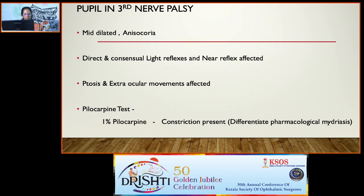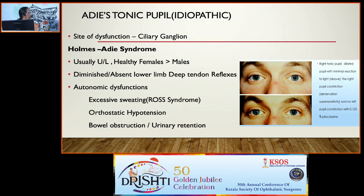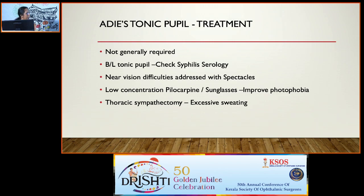In third nerve palsy, the pupil is mid-dilated with anisocoria; direct, consensual, light, and near reflexes are affected with associated ptosis and extraocular motility deficiency. It can be differentiated from pharmacological mydriasis by 1% pilocarpine — a third nerve palsy pupil will constrict but pharmacological mydriasis will not. Tonic pupil results from damage to the ciliary ganglion and short ciliary nerves due to viral infections, trauma, diabetes, or idiopathy. The affected pupil is larger, the light reaction is absent, the near reflex is very slow and tonic, and there is accommodative paresis. This tonic pupil shows cholinergic supersensitivity to low-dose pilocarpine. Holmes-Adie syndrome is usually unilateral, more common in healthy females, with associated diminished lower deep tendon reflexes and autonomic dysfunction.